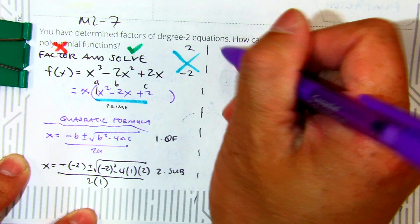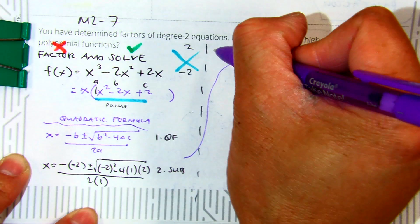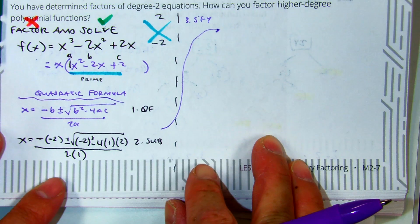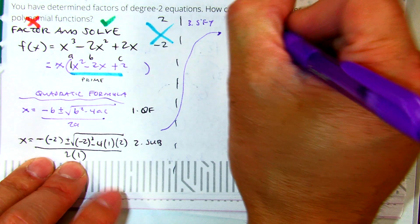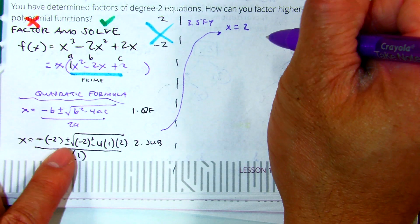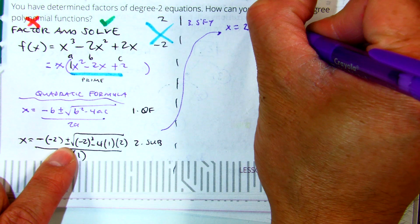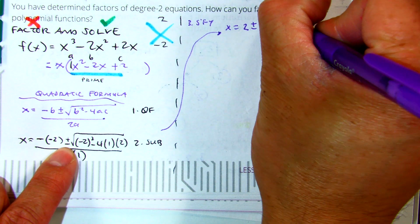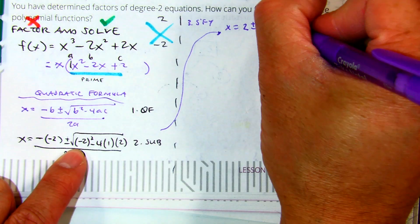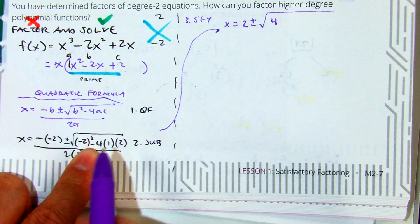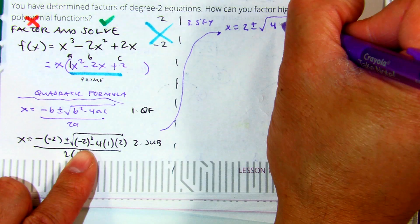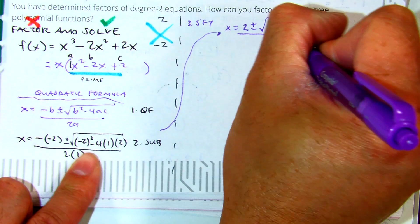Then over here, because I ran out of space, the next thing I'm going to do is lots of simplifying. The opposite of negative 2 is positive 2. I have the plus or minus. Negative 2 times negative 2 is positive 4. Negative 4 times 1 is negative 4. Negative 4 times 2 is negative 8. All over 2.